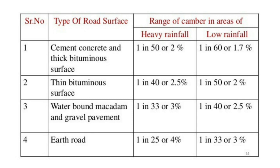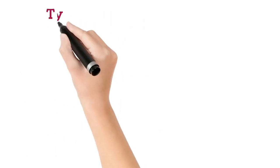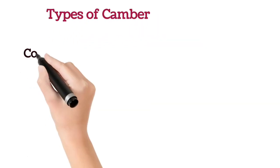For cement concrete and thick bituminous surface, camber in heavy rainfall area is 2% whereas in low rainfall area it is 1.7%. For thin bituminous surface, camber in both heavy and low rainfall areas is 2.5%. For earthen roads, camber in heavy rainfall area is 4% and in low rainfall area is 3%.